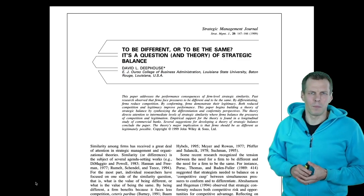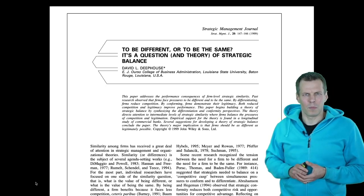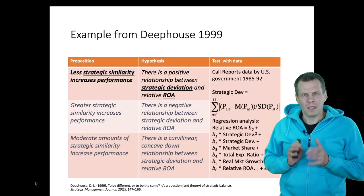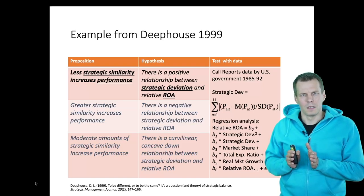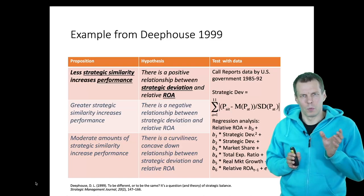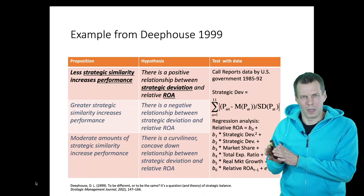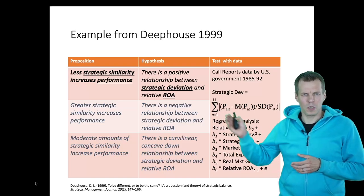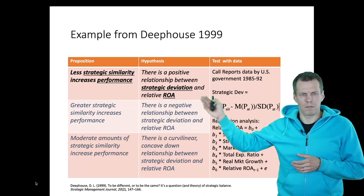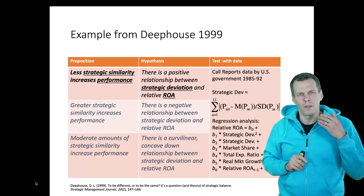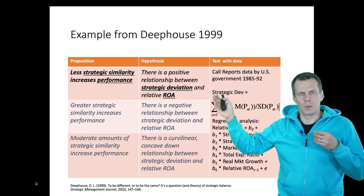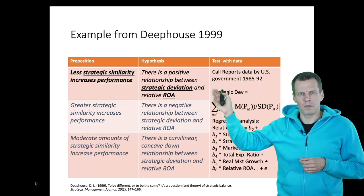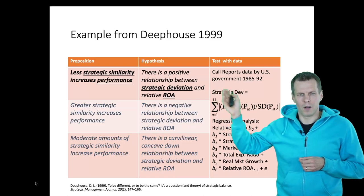Let's look at the Deephausen paper again and how they apply the deductive, theory-testing approach. What I like about the paper is that it presents both a proposition and a statistical hypothesis. Their proposition — at the level of theory — is that less strategic similarity increases performance. Their hypothesis — at the level of data — is that there is a positive relationship between strategic deviation and relative ROA.